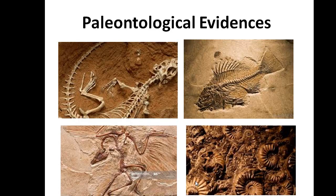The next evidence is paleontological evidence. Paleontology is the study of fossils. In the textbook image showing ground levels and fossils, at the base there are invertebrates, then above them are fossils of amphibia and pisces, then reptiles, and at the top are aves — birds — and mammals. This shows that there is an evolution in organisms from invertebrates to vertebrates.